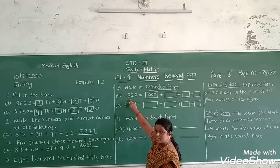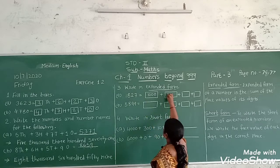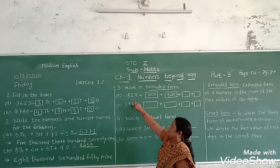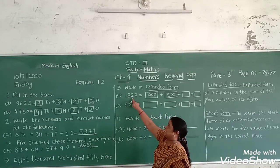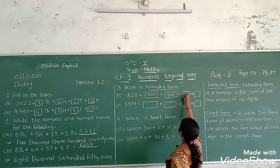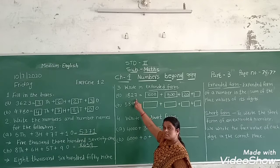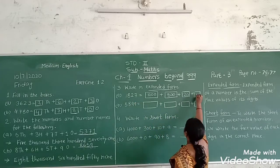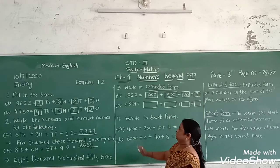Eight is in the hundreds place, so we write eight hundred. Two is in the tens place and its place value is twenty. Seven is in the ones place, so we write seven.